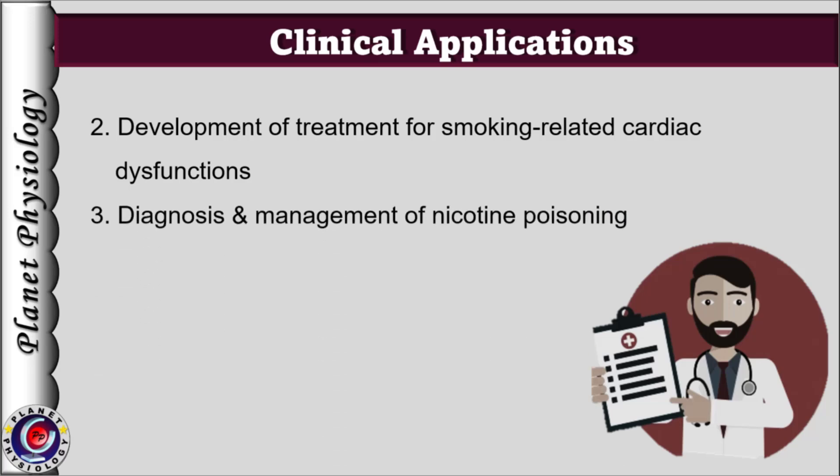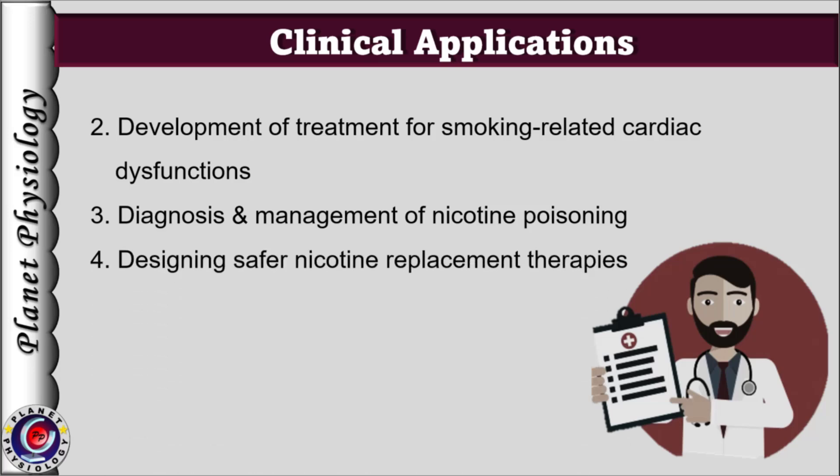This experiment also demonstrates nicotine's biphasic effect, which is crucial for diagnosing and managing nicotine poisoning. This knowledge helps in designing safer nicotine replacement therapies to minimize cardiovascular risk. Furthermore, nicotine's stimulatory and then desensitizing action is very similar to ganglionic blockers like hexamethonium, which were historically used for treatment of severe hypertension. Thus, this experiment bridges basic physiology with clinical medicine, reinforcing the importance of understanding nicotine's autonomic effects in cardiovascular health, smoking cessation and toxicology.